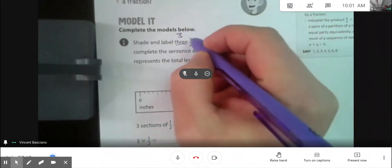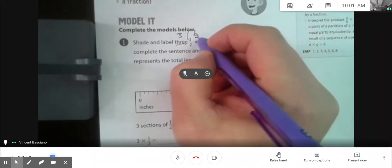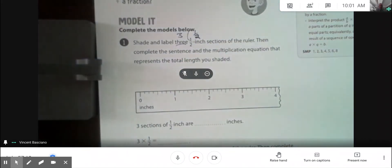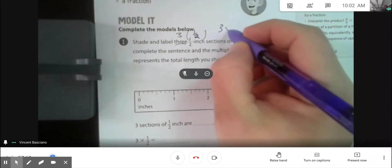Okay, so I know I'm going to do three half-inch sections, three groups of one-half. You're probably already thinking you know what that multiplication sentence is, right? It's going to be three groups of one-half. It's three times one-half.